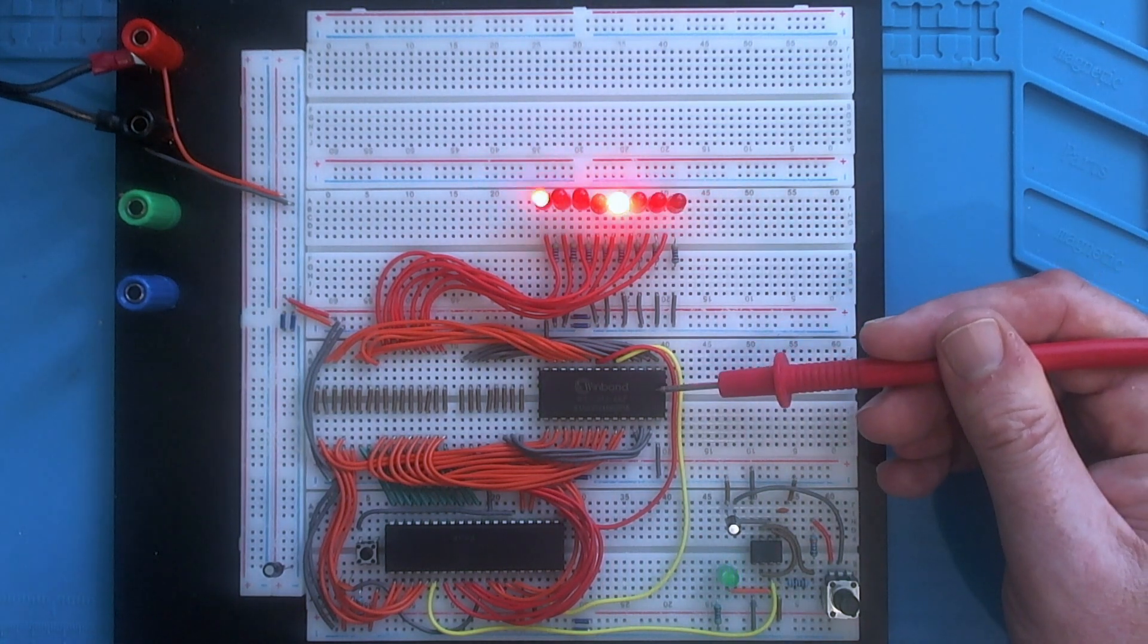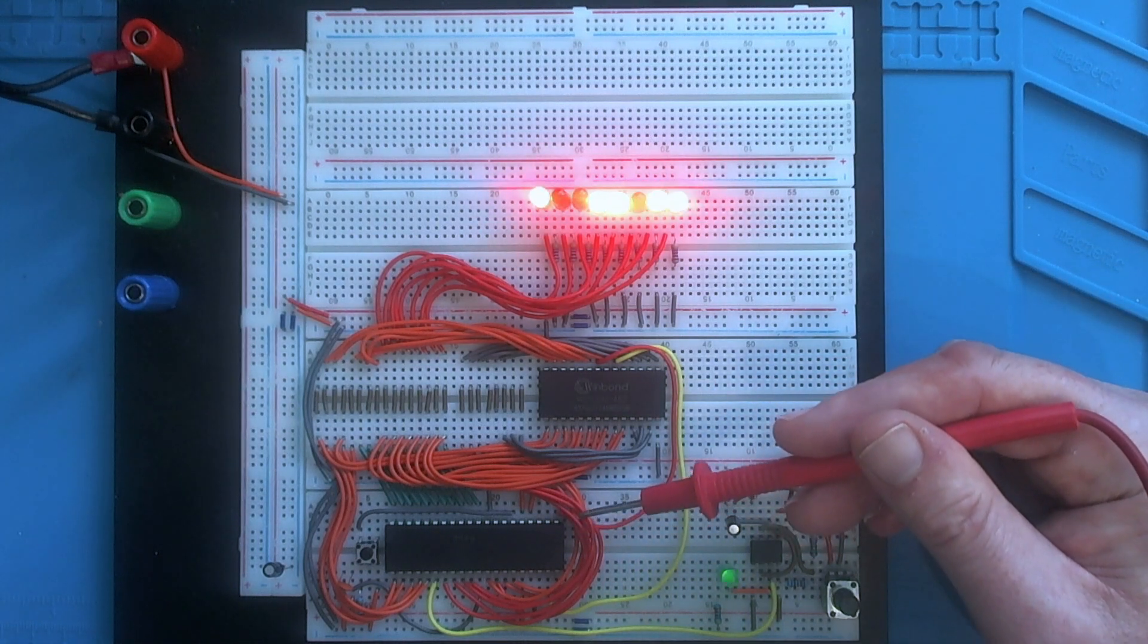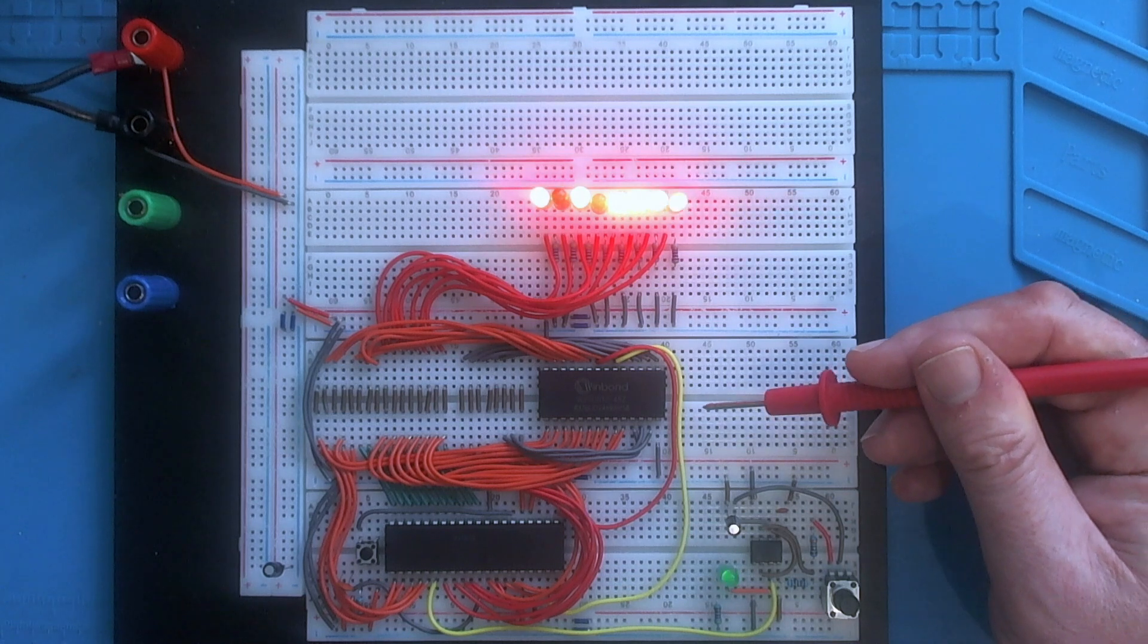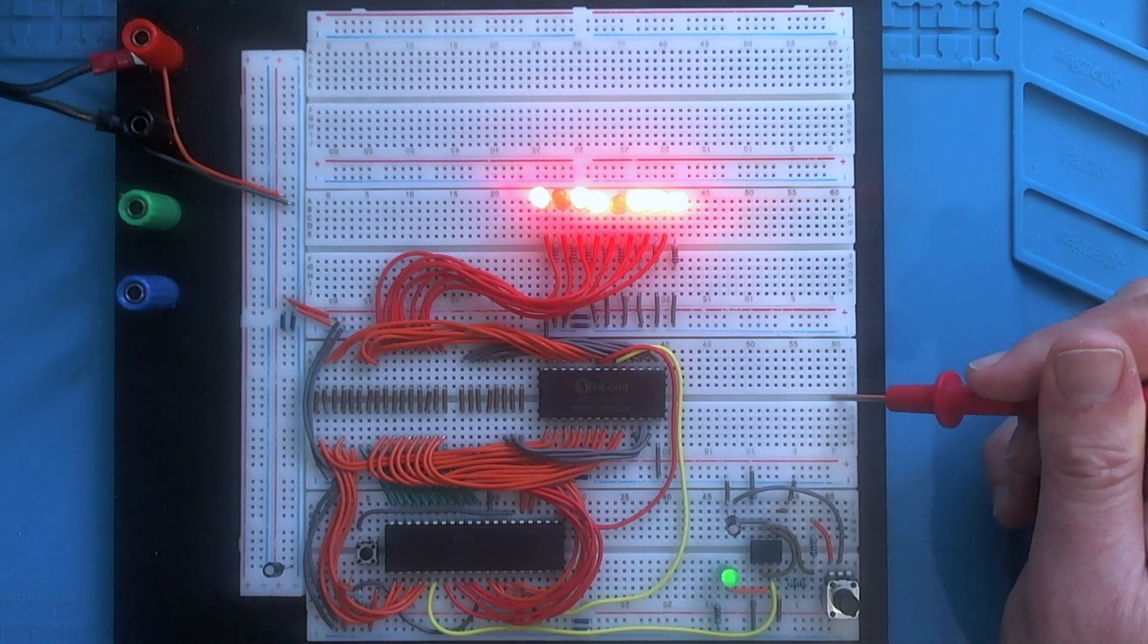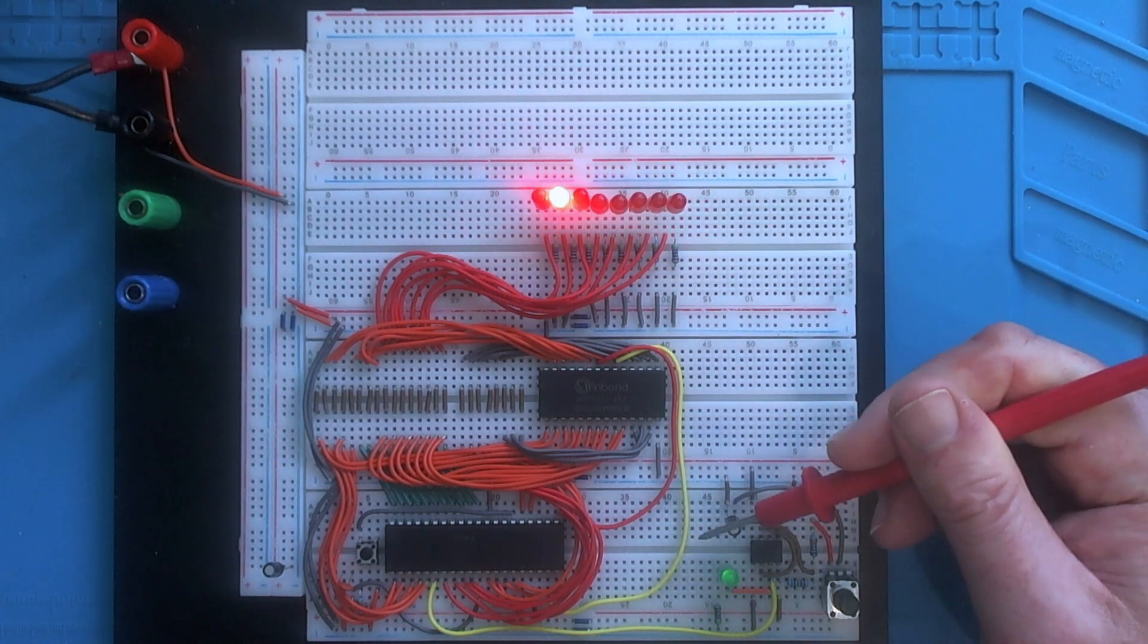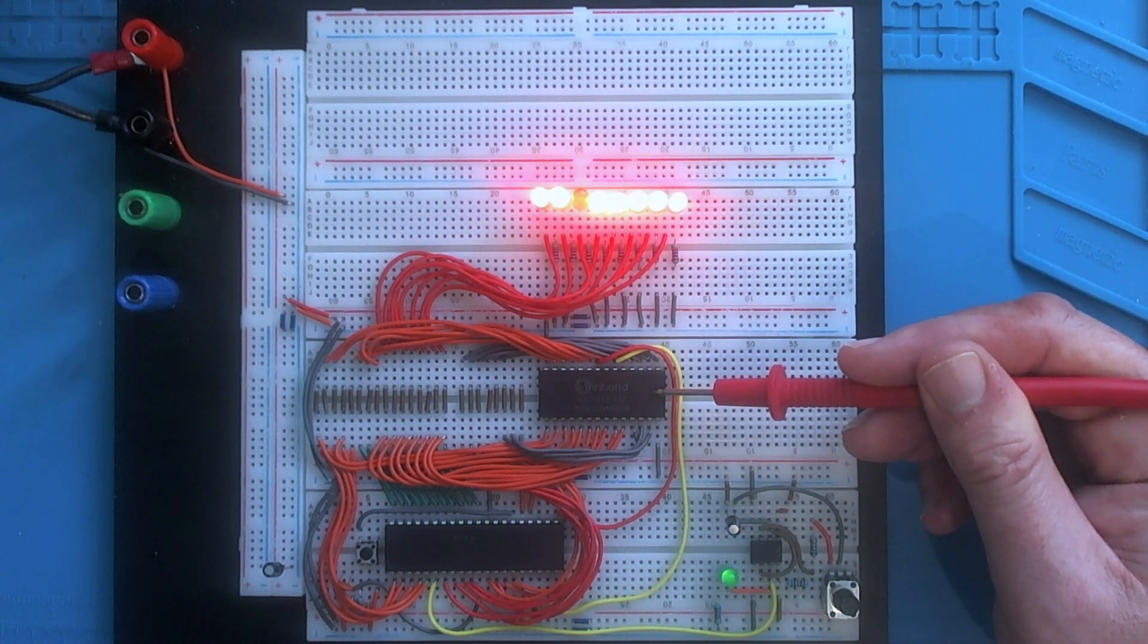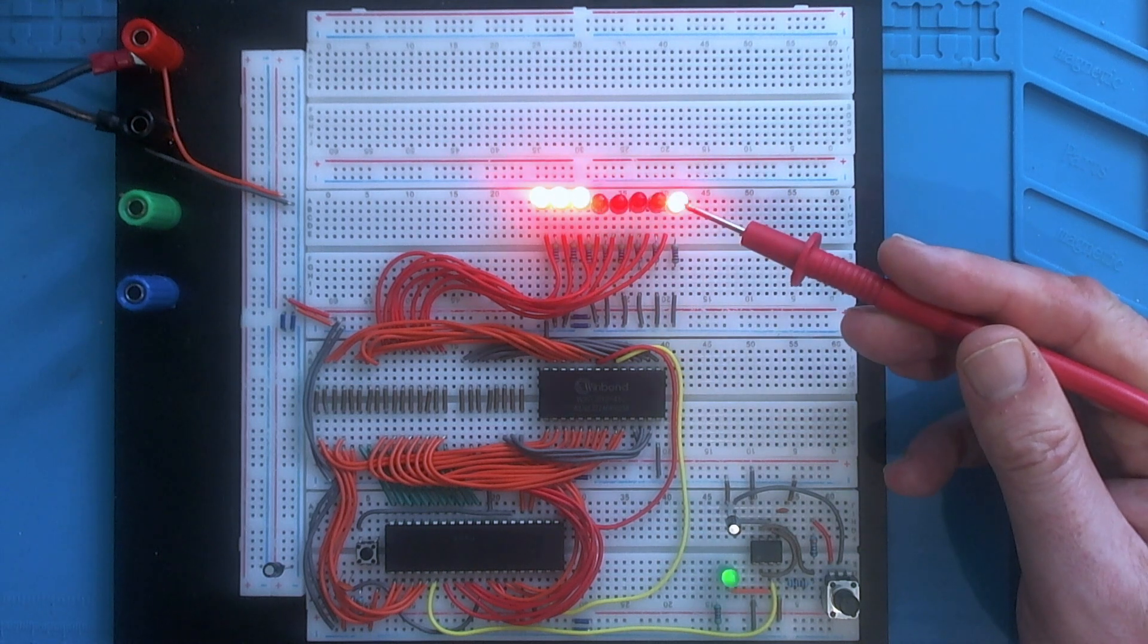However, I should be able to upload a program into the ROM and see it run. So the next step is to populate this area of the board with a RAM chip, add the chip select logic, upload a program to here, and see whether we can get something running and outputted on the LEDs.